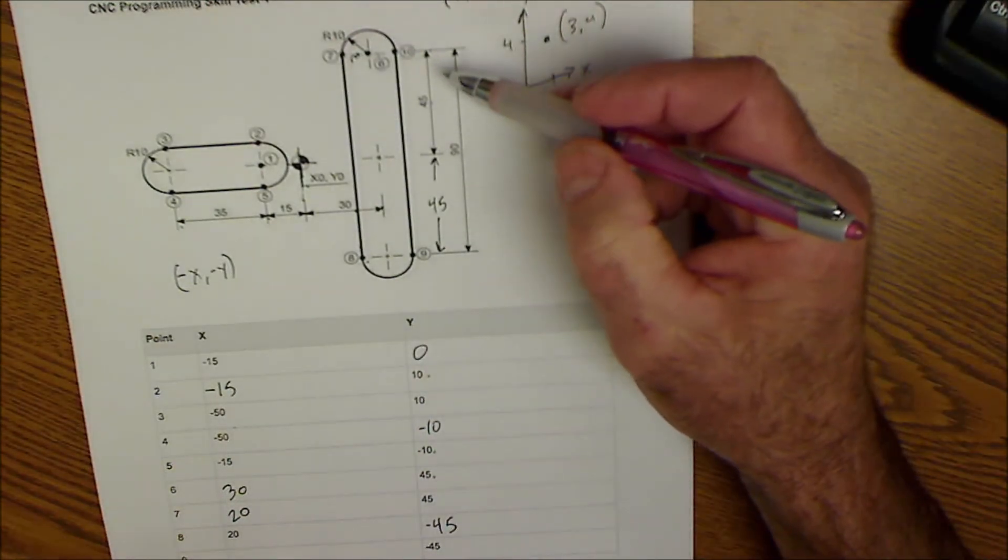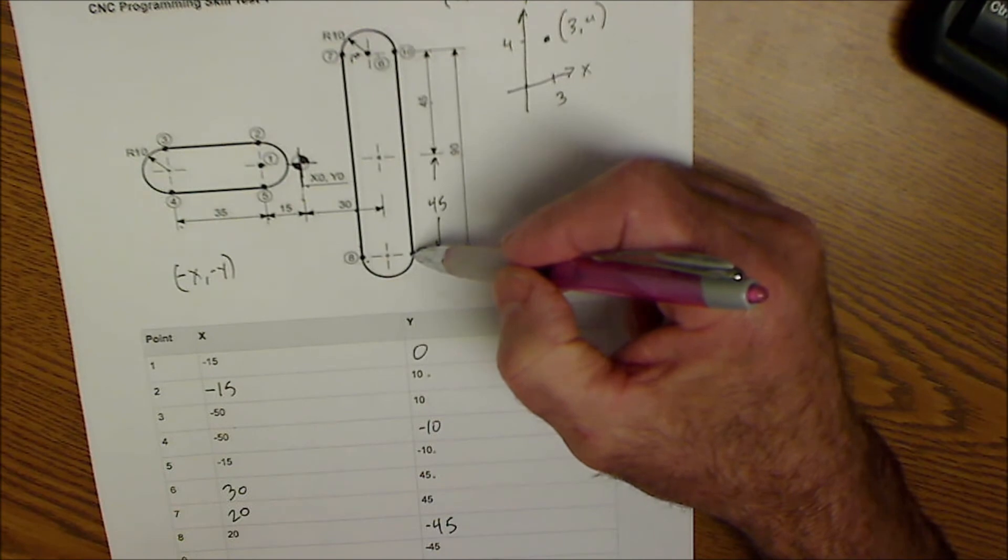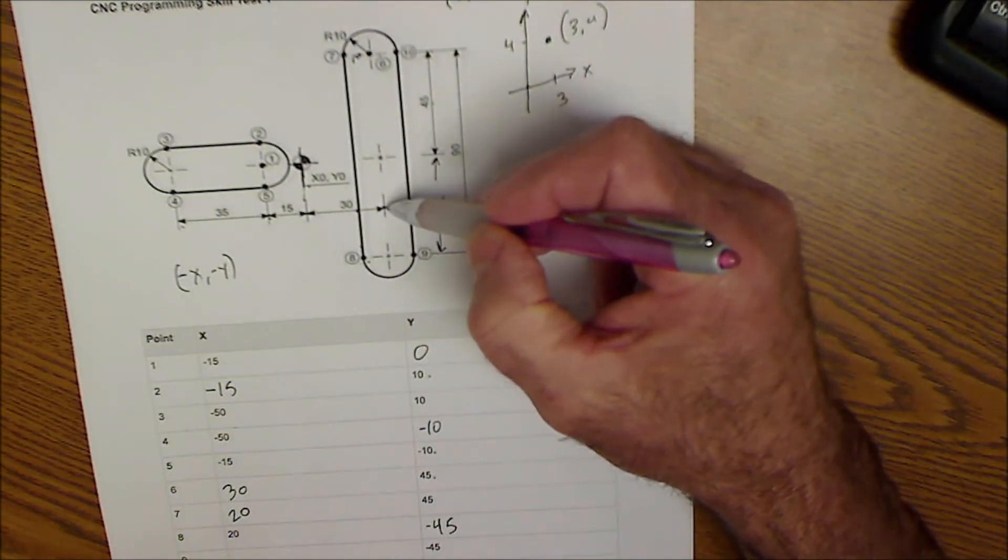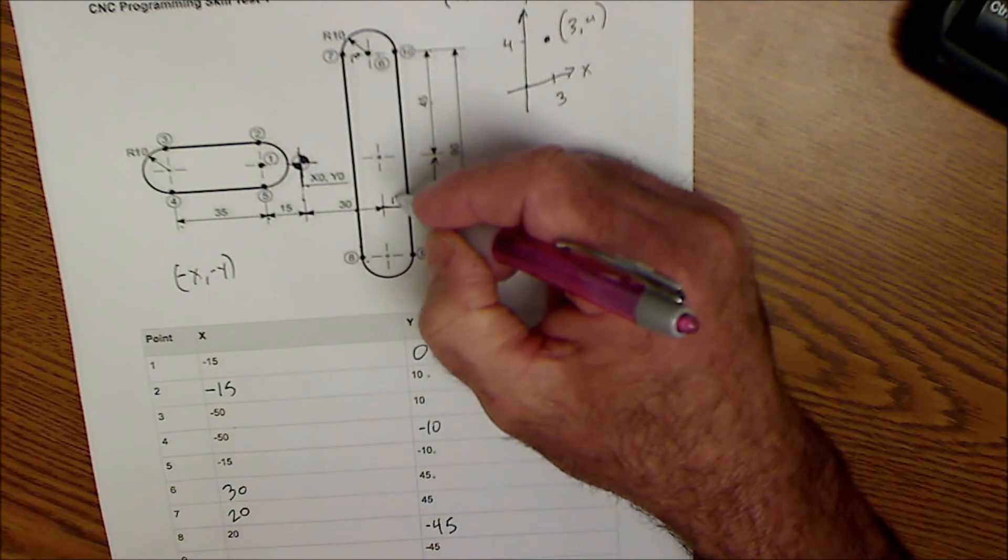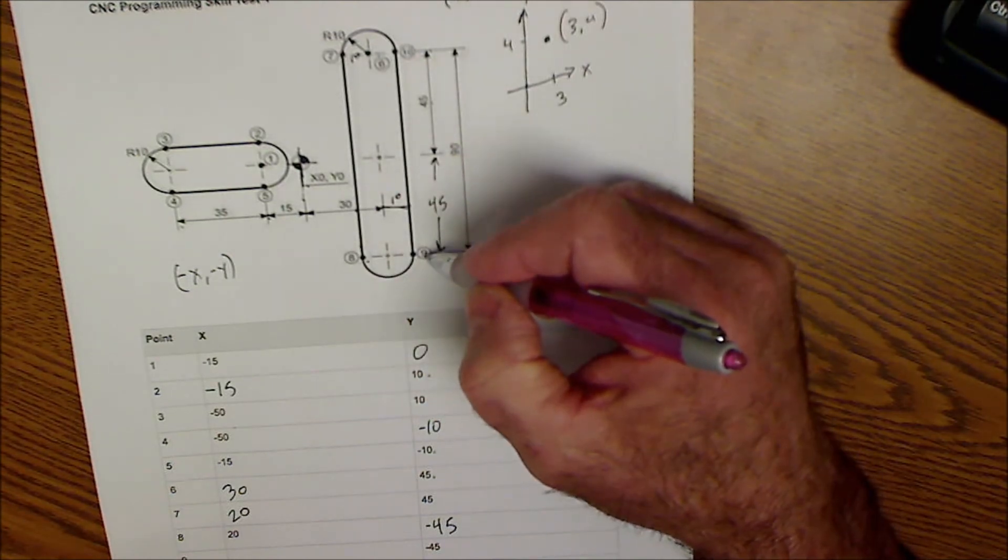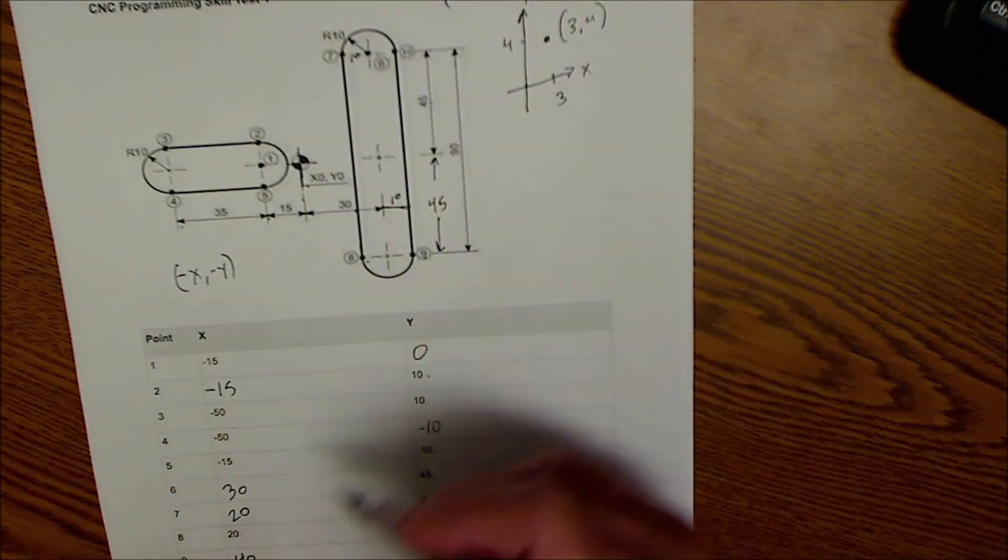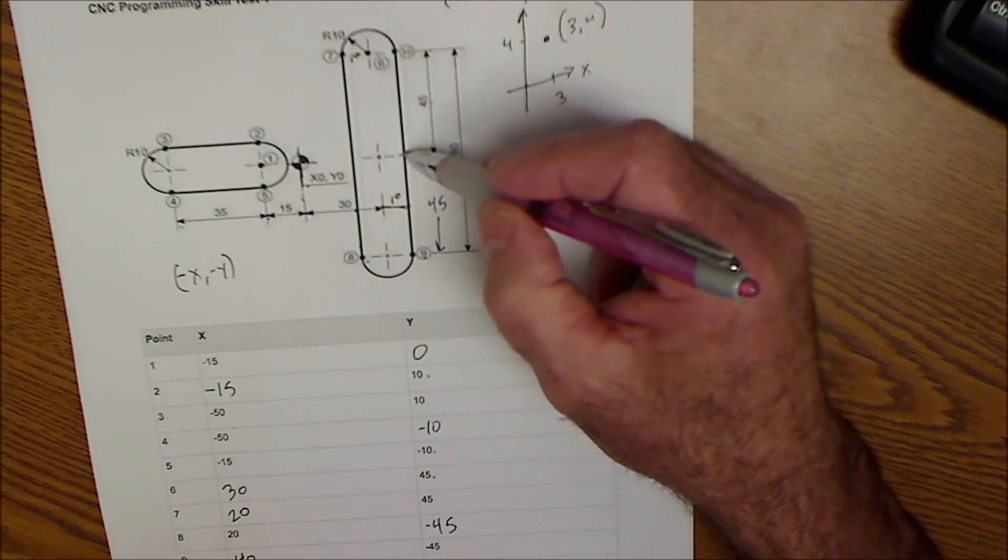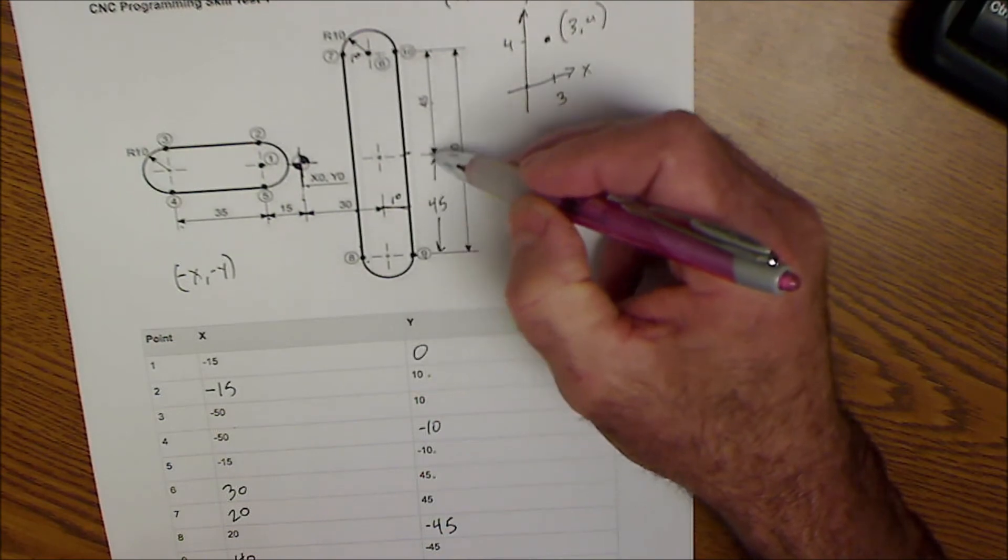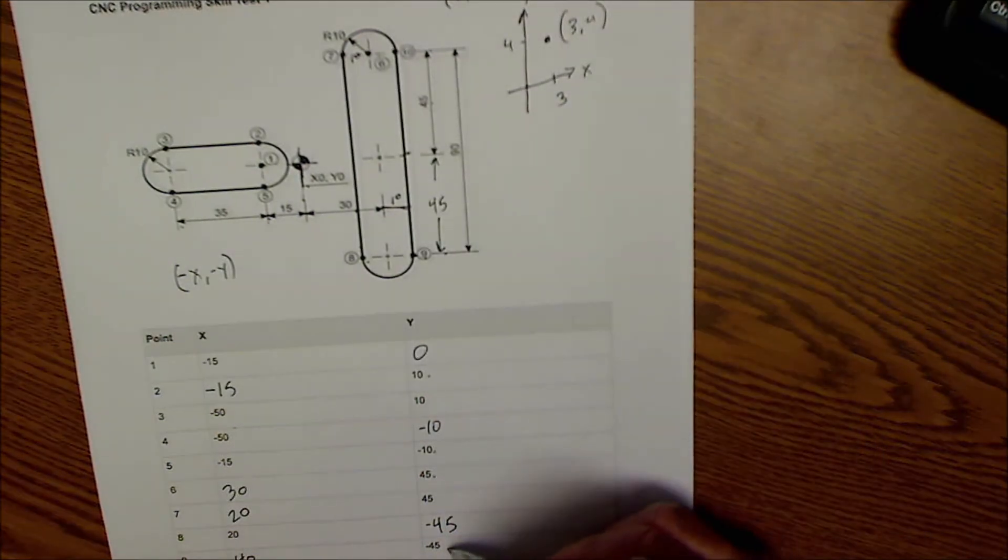Point number nine is here. It is over 30 plus this amount right here, which is going to be a radius of 10, so it's over a total of 40. And then it's up from here down to here, negative 45 - that's where that comes from.